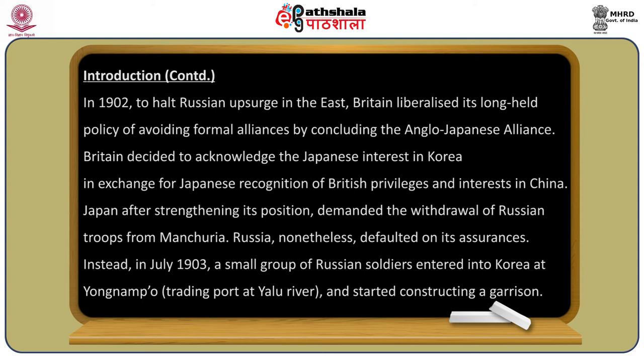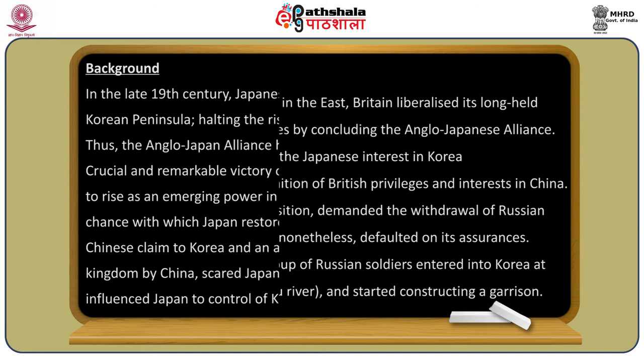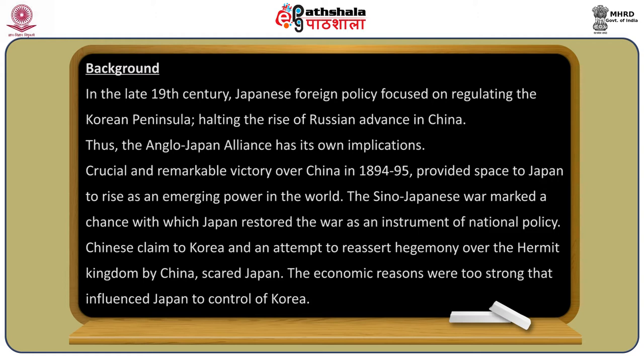Japan, after strengthening its position, demanded the withdrawal of Russian troops from Manchuria. Russia nonetheless defaulted on its own assurances. Instead, in July 1903, a small group of Russian soldiers entered Korea at Yongempo, a trading port at the Yalu River, and started constructing a garrison. In the late 19th century, Japanese foreign policy focused on regulating the Korean peninsula and halting the rise of Russian advance in China.